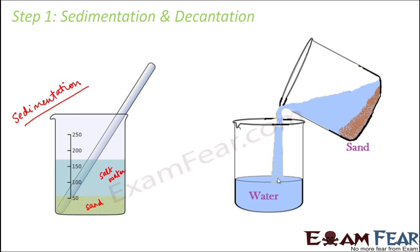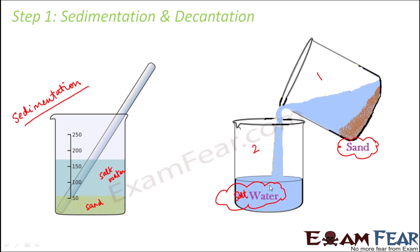Sedimentation is followed by decantation, where we pour out the upper layer of water. Let's call the containers container one and container two. In container one you will have sand, and in container two you will have salt water — that is salt dissolved in water.